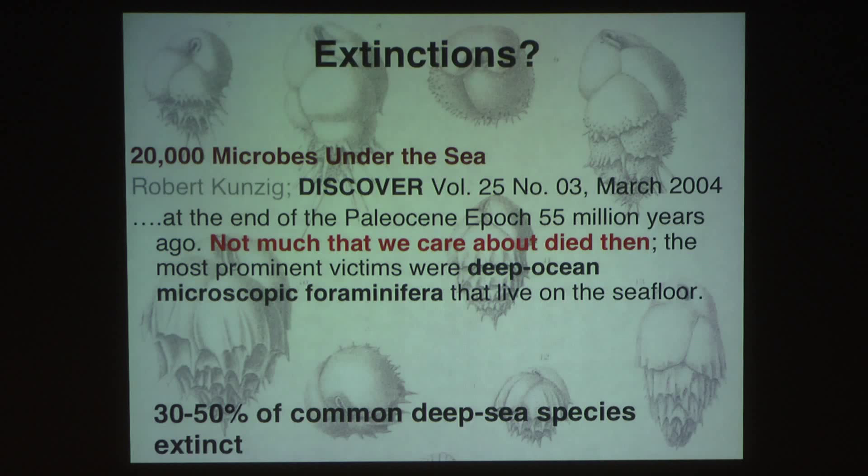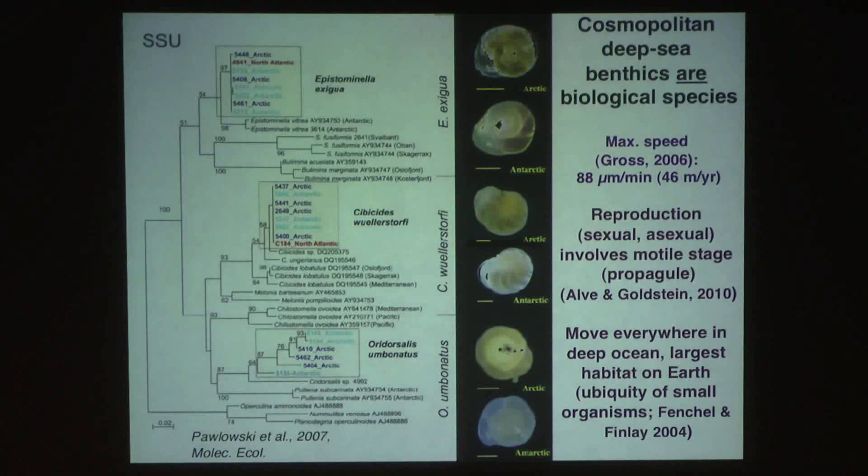But about 30 to 50 percent of the common deep sea species went extinct. And so the question is why. And so if you look at cosmopolitan deep sea species, we do not have genetic information on many. I'm showing the three species on which we do have information. There's a couple more. However, if you look at them genetically, all three species are genetically pretty much identical between the Arctic and the Antarctic.